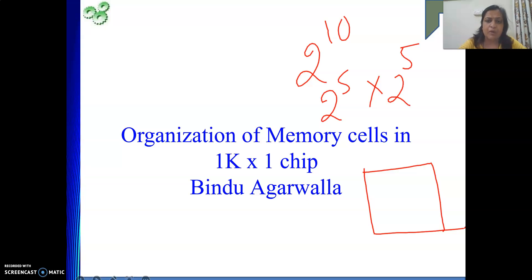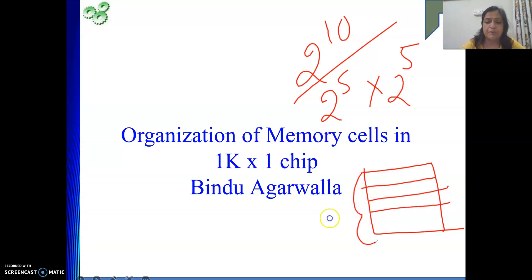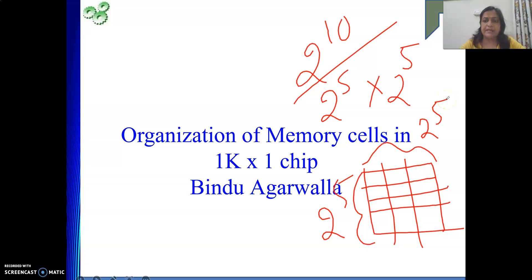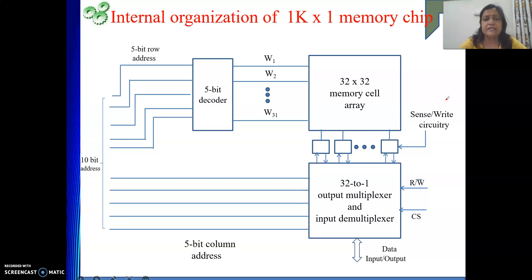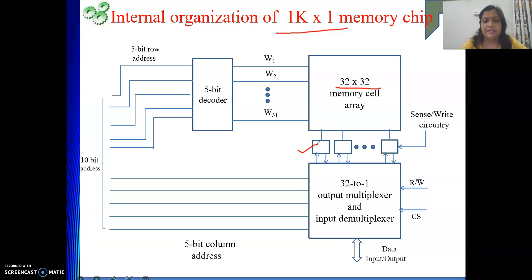As a whole, we require 10 number of address lines because the total number of cells is 2 to the power 10. But internally, my memory chip has the cells arranged in row by column order, not as a linear array of 2 to the power 10 rows. In case of 1K by 1 memory, I am going to have a 32 by 32 cell array. Each cell is capable of holding one bit of data, and each cell in a column is connected to the sense/write circuit.